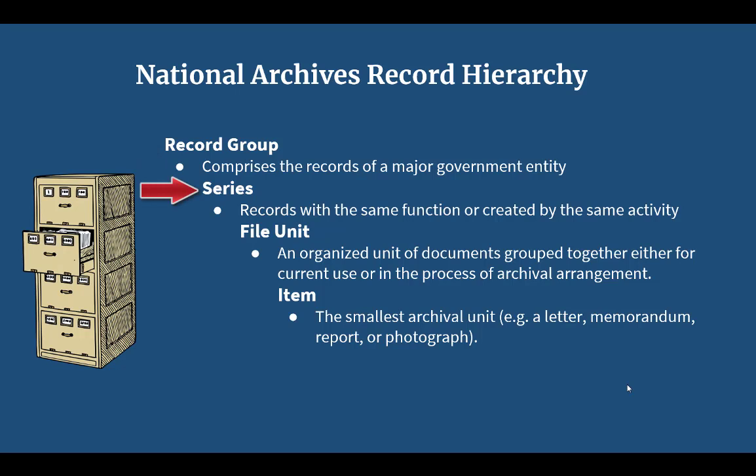The next level in our hierarchy is series, which further organizes records of a government agency. You can think of a series as a drawer within a file cabinet. Records that have the same function or were created by the same activity are in a series together. An example of a series is mission photographs taken during the space shuttle program, 1981 to 2011, which is part of record group 255, Records of NASA. A series can be one box or it could be thousands of boxes. 95% of our records are described at the series level, meaning you can find basic information — including how big it is, from a few linear inches to thousands of linear feet — and where the records are located, from its catalog description.